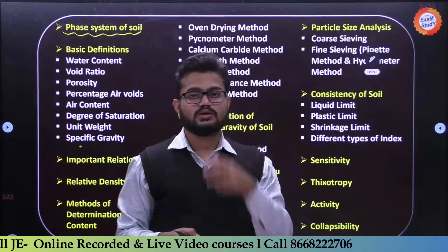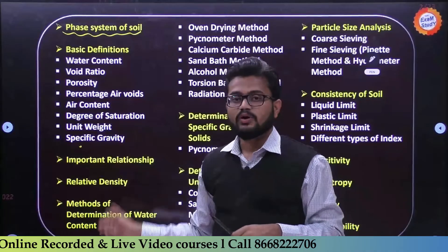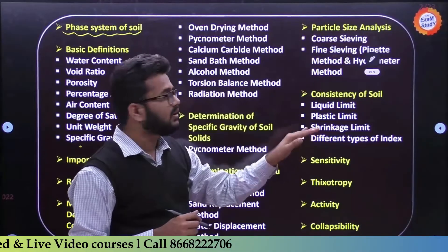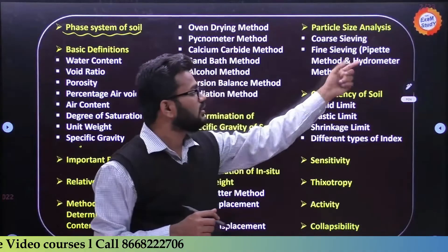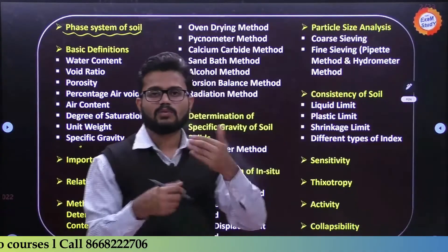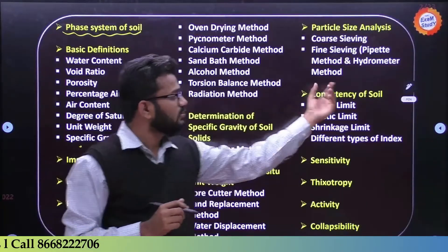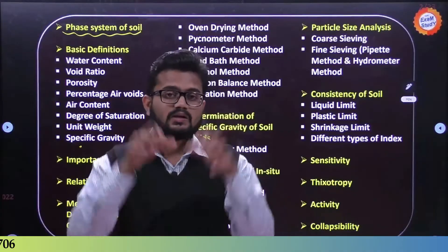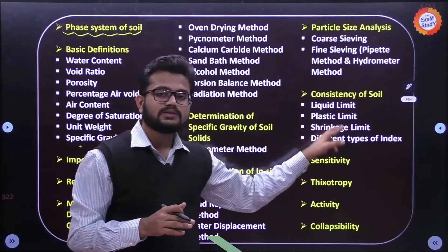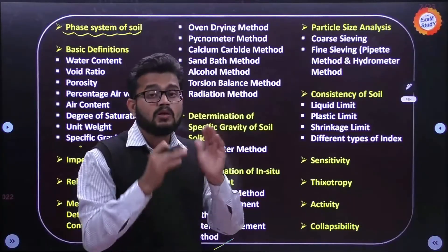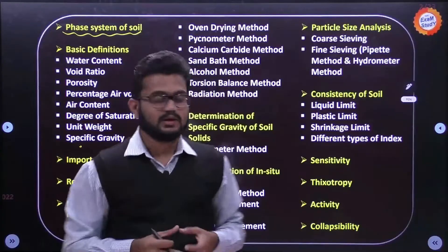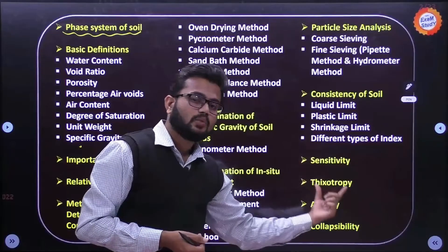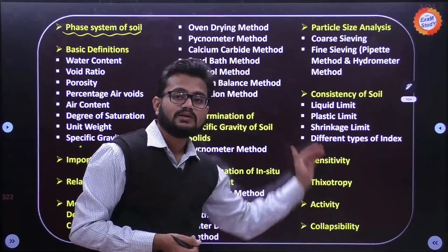Next is particle size analysis. For coarse-grained soils and fine-grained soils we use different analyses. Coarse analysis is done separately and fine analysis separately. For fine analysis, the pipette method and hydrometer method are used. After that we discuss the consistency properties of soil: liquid limit, plastic limit, and shrinkage limit. Then index properties - different types of indices are defined.